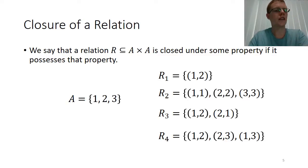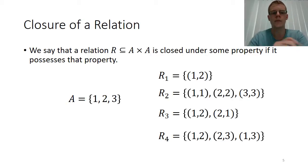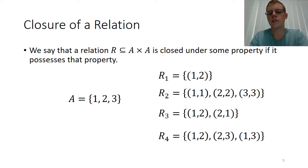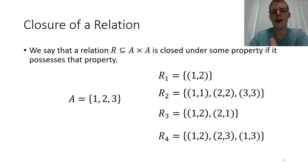The second concept of closure is the closure of a relation under some property. It's basically the same idea but slightly different, and sometimes students get them mixed up. We say that a relation from A onto A is closed under some property — for example, reflexivity, symmetry, or transitivity — if the relation possesses that property. So basically if R is transitive then it is closed under transitivity.